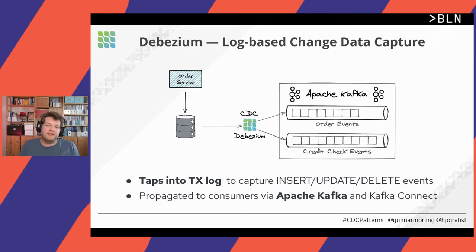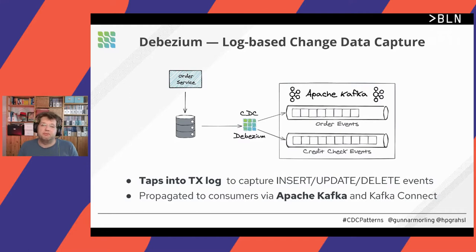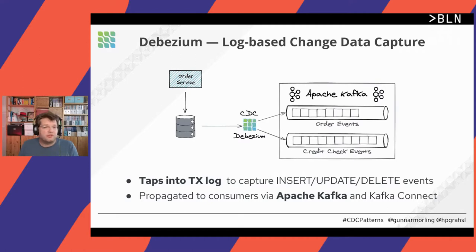Consumers can subscribe to those Kafka topics. By default, we have one topic per table we are capturing, and they can react to those change events. We could use those events to update a cache, a search index, to run streaming queries, or to exchange data between microservices — which is what we are going to focus on in this talk today.